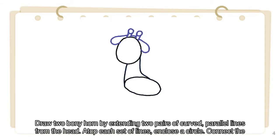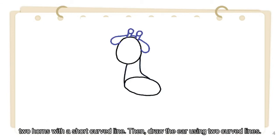Draw two bony horns by extending two pairs of curved, parallel lines from the head. Atop each set of lines, enclose a circle. Connect the two horns with a short curved line. Draw the ear using two curved lines.